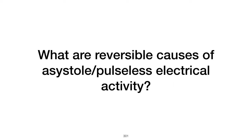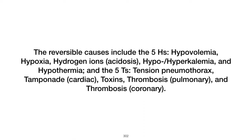What are the reversible causes of asystole or pulseless electrical activity (PEA)? The reversible causes are summarized by the 5 H's and 5 T's: hypovolemia, hypoxia, hydrogen ion (acidosis), hyper/hypokalemia, hypothermia, tension pneumothorax, tamponade (cardiac), toxins, thrombosis (pulmonary), and thrombosis (coronary).